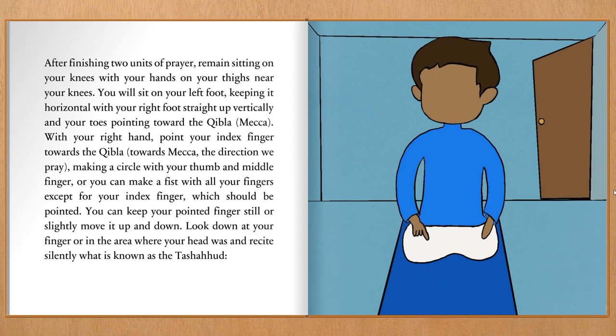After finishing two units of prayer, remain sitting on your knees with your hands on your thighs near your knees. You will sit on your left foot, keeping it horizontal, with your right foot straight up vertically and your toes pointing towards the Qibla, Mecca. With your right hand, point your index finger towards the Qibla, making a circle with your thumb and middle finger, or you can make a fist with all your fingers except for your index finger, which should be pointed. You can keep your pointed finger still or slightly move it up and down. Look down at your finger or in the area where your head was.